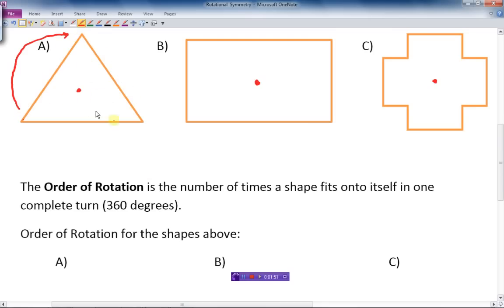And if I keep doing it again, move this one around, it would be the same thing. So what happens is this shape has an order of rotation of three. There are three different positions in 360 degrees that it looks exactly the same.